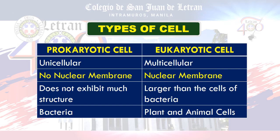We have two types of cells: prokaryotic cell and eukaryotic cell. Prokaryotic cell is composed of only one cell, meaning it is unicellular, while eukaryotic cell is multicellular. Eukaryotic cell has a nuclear membrane, while prokaryotic cell does not. As you can see on the structure, eukaryotic cell is larger compared to prokaryotic cell. A good example of prokaryotic cell is bacteria, while eukaryotic cells include plant and animal cells.